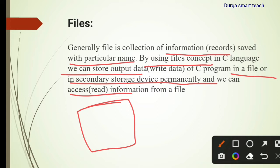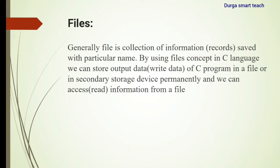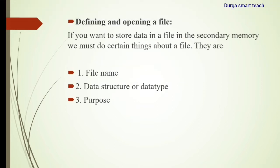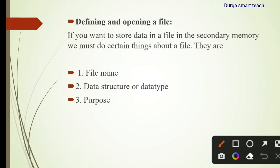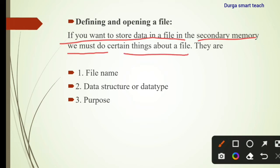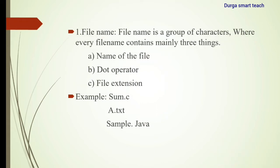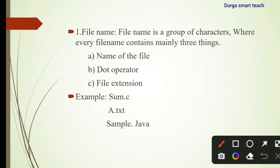So first, how to create files — defining and opening a file. If you want to store data in a file in the secondary memory, you must consider certain things: file name, data structure or data type, and purpose. These three things are required for creating a file in secondary memory.